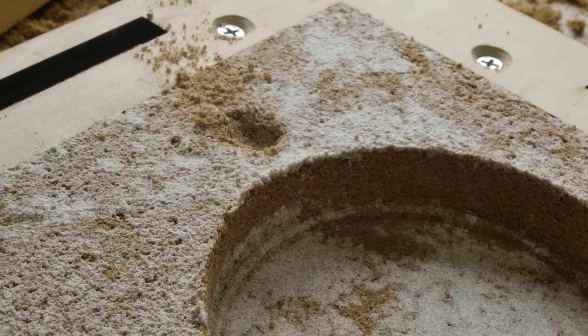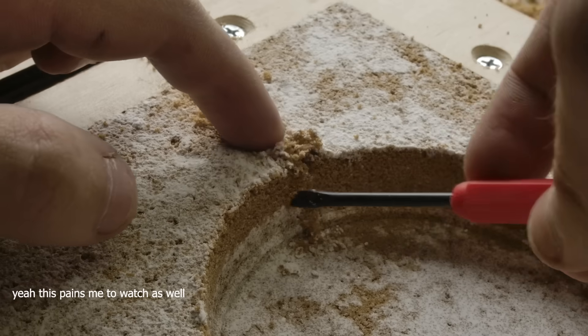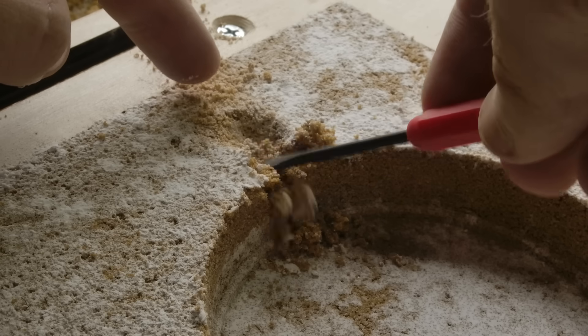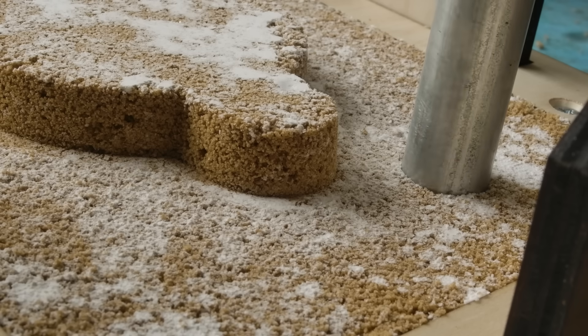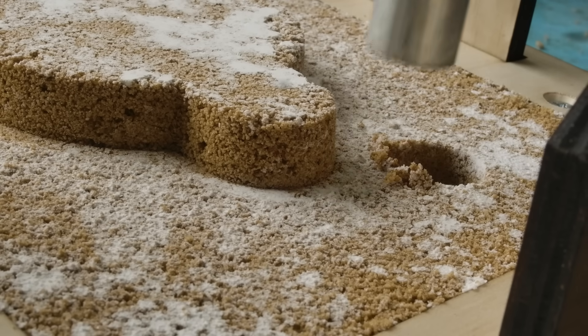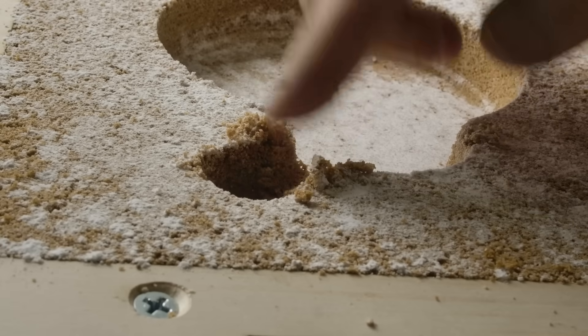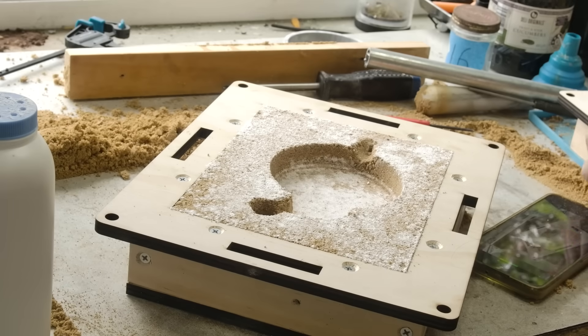The final step before casting is cutting the runners and adding a riser. The runners are carved into the sand, and connect the pouring basin to the cavity and riser. There can be one or more riser in a pattern, depending on its size, and they act as reservoirs of liquid metal, to fill the extremities of a part as it rapidly cools. My runners were crude, but they did the job.